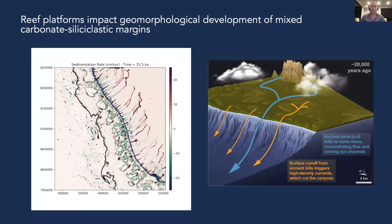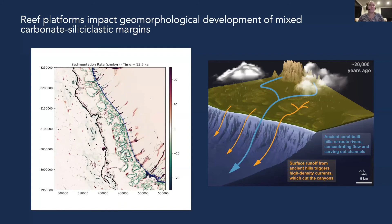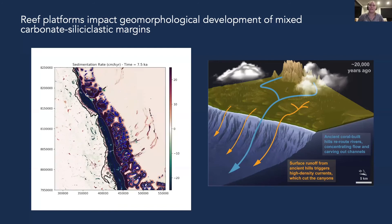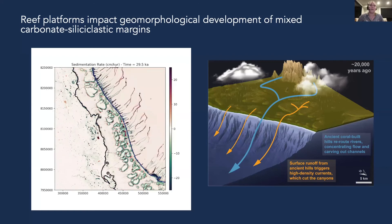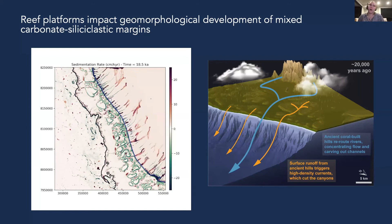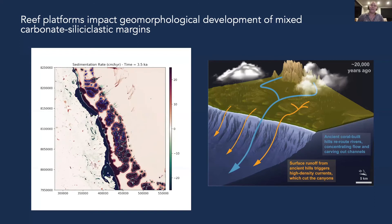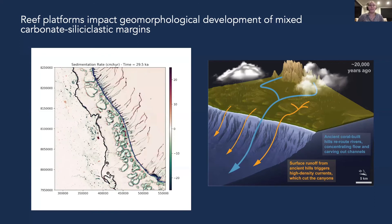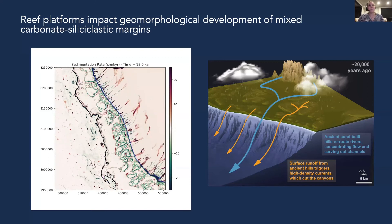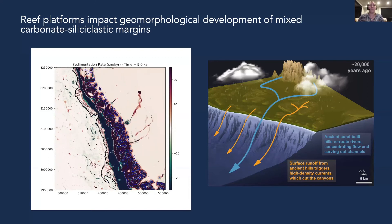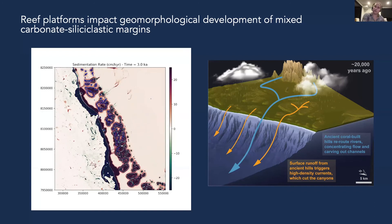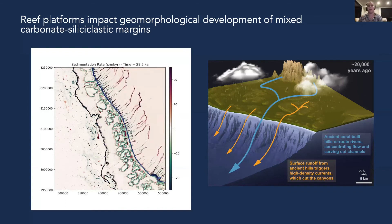The second contribution includes work published last year, where we used Badlands to simulate processes on the Great Barrier Reef margin over the course of a lowstand and a marine transgression. This project was possible because Badlands was modified to simulate processes that operate on mixed carbonate-siliciclastic margins, which have their own separate behaviors and development compared to pure siliciclastic or pure carbonate margins.